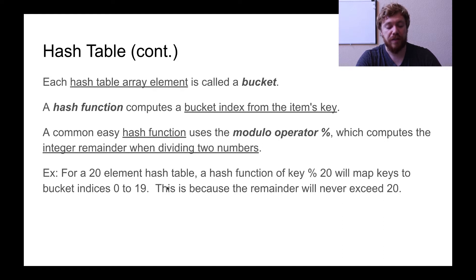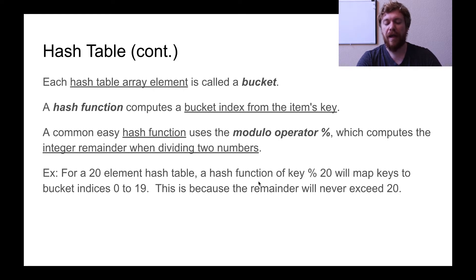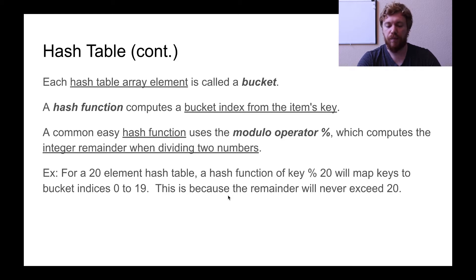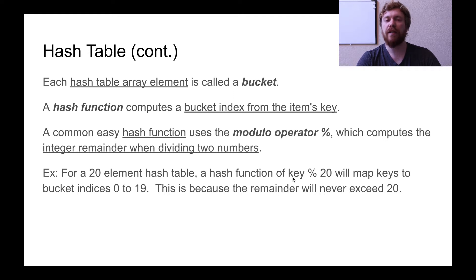For example, if we have a 20-element hash table — our hash table has a capacity of 20 elements — a hash function of key modulo 20 will map keys to bucket indices 0 through 19. This is convenient because the remainder can never exceed what you're moduloing by, so it will never exceed 20. Of course, the key here should be a number, but that doesn't mean it can't originally be a string and then get converted into a number.